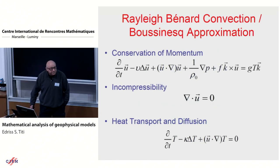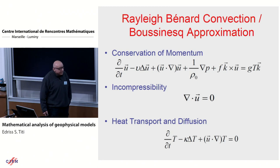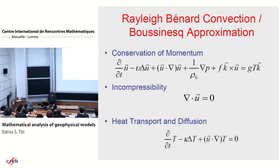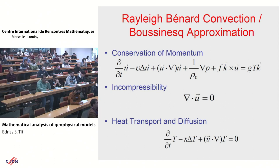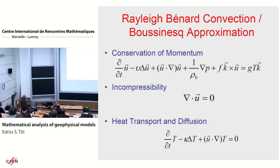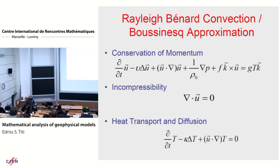Let me start from an equation which we take for granted — this is the Boussinesq approximation for fluid with buoyancy. The first equation is the conservation of momentum. U is the velocity, rho-zero is a constant background density, nu is the viscosity. The unknowns are the three components of the velocity, the pressure P, and the temperature T.